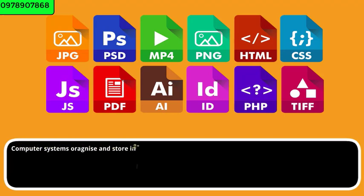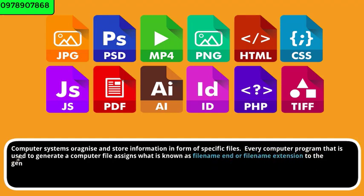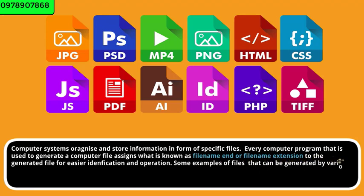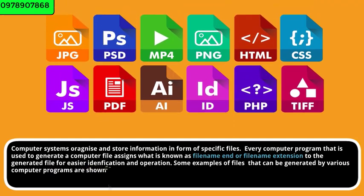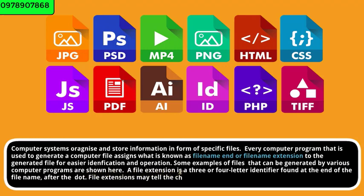Computer systems organize and store information in format-specific files. Every computer program that is used to generate a computer file assigns what is known as a file name and/or file extension to the generated file for easier identification and operation. A file extension is a three or four letter identifier found at the end of the file name after the dot, and file extensions may tell the characteristics of a file and its use.